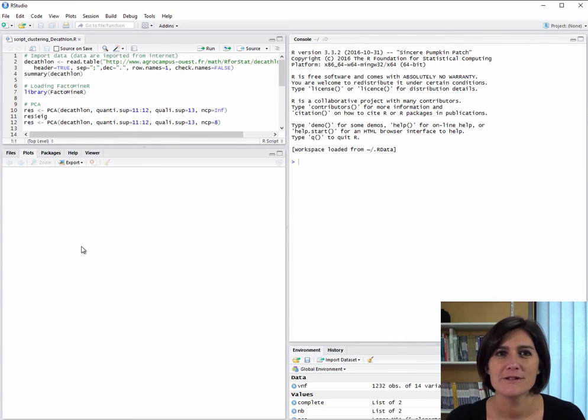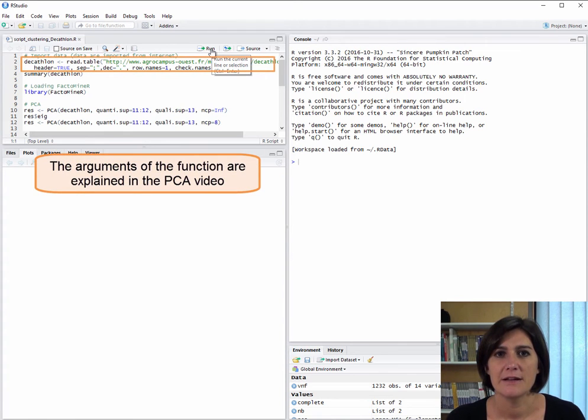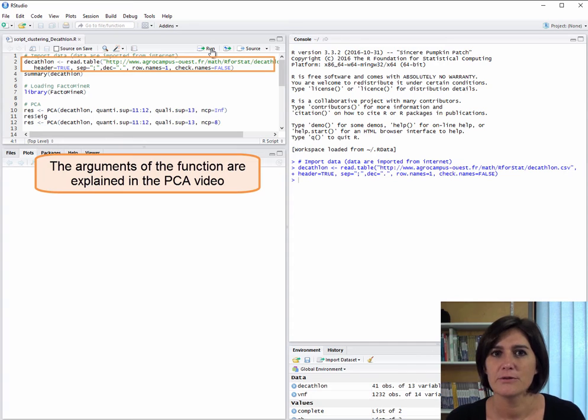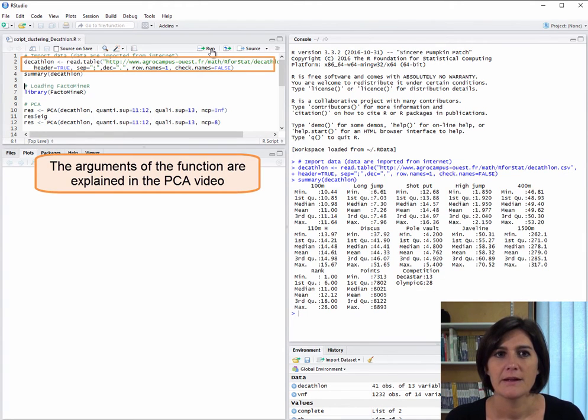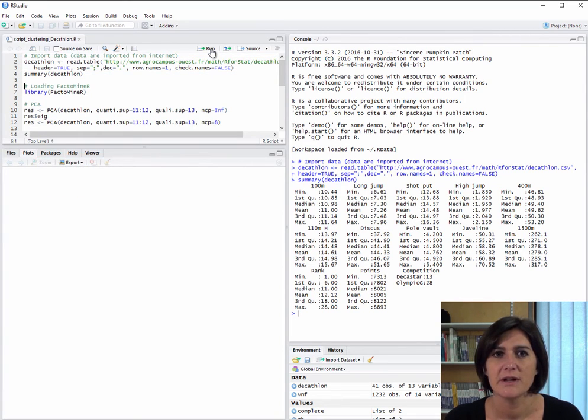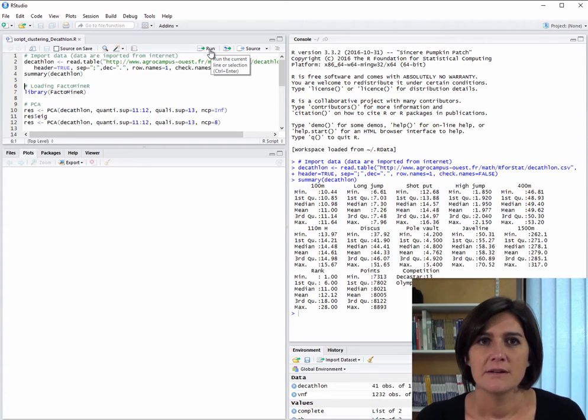Let's now see how to put clustering into practice using FactoMiner. The first thing we are to do is import the dataset like this. So far so good, the data seems to be imported correctly. Let's check on this. The first 10 variables are indeed quantitative and we have two supplementary quantitative variables, rank and the number of points. And the last variable, the competition, is indeed qualitative.